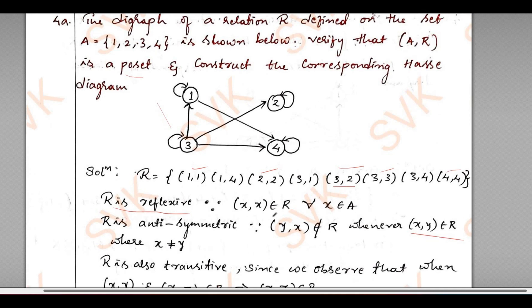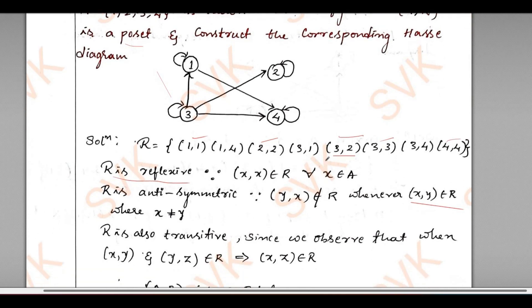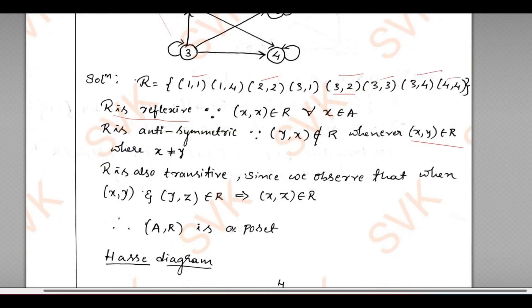Also, it is transitive. How can we say it is transitive? If you consider one example (3,1) and (1,4), then (3,4). So we have a (3,4) relation. Therefore, it is transitive. It is satisfying: when there is (x,y), (y,z), then (x,z) belongs to R. Therefore, I can say that it is a POSET.